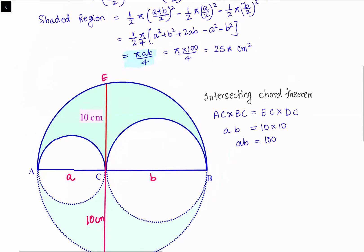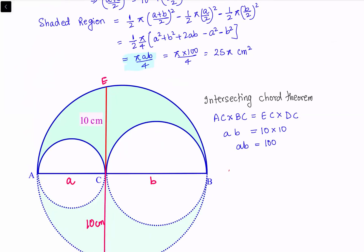The area of shaded region that we calculated earlier is π times AB by 4. Putting the value of AB, the area of shaded region is π times 100 by 4, or 25π centimeters squared.